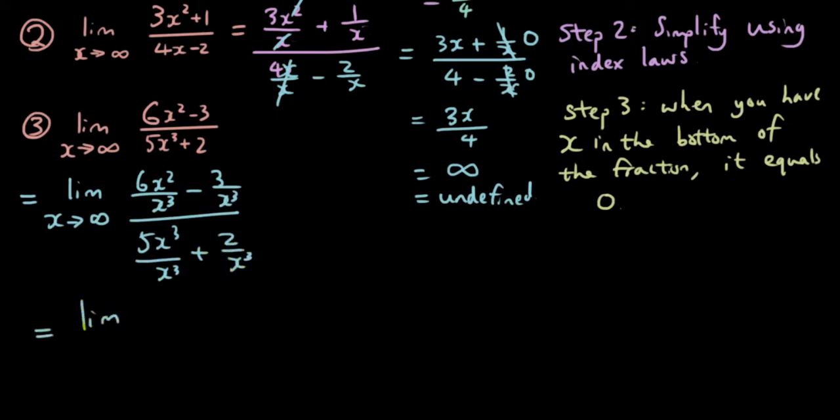Now, after you substitute in x equals infinity, and if I continue with that, if I simplify it with the index laws, that becomes 6 over x minus 3 over x³ over 5 plus 2 over x³.